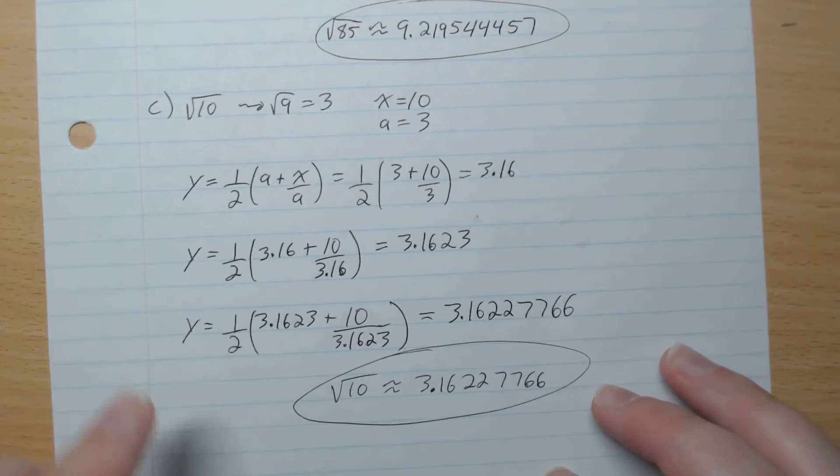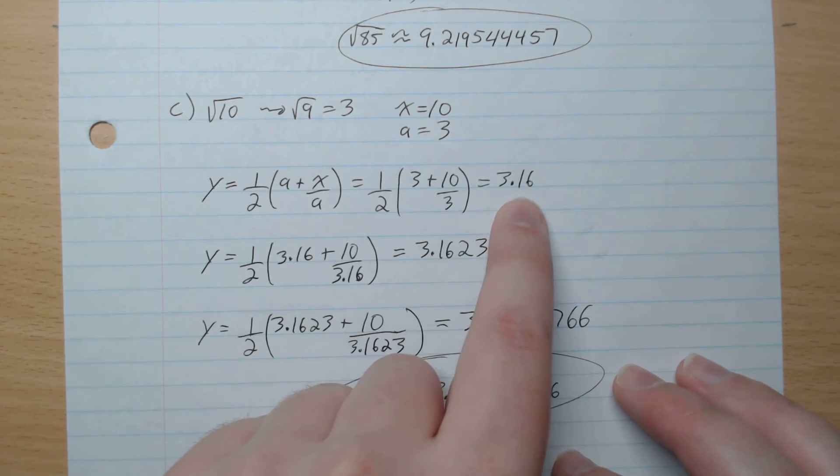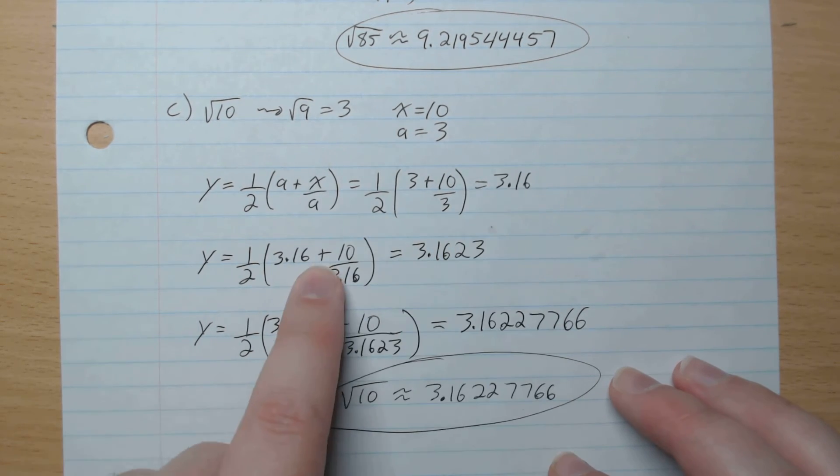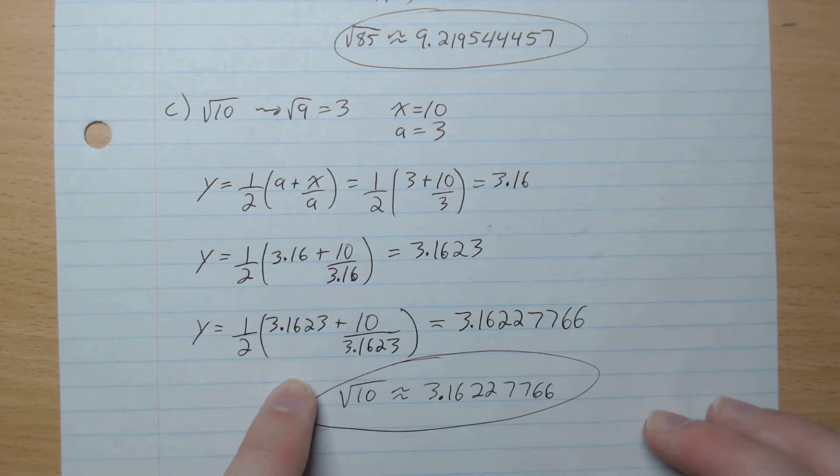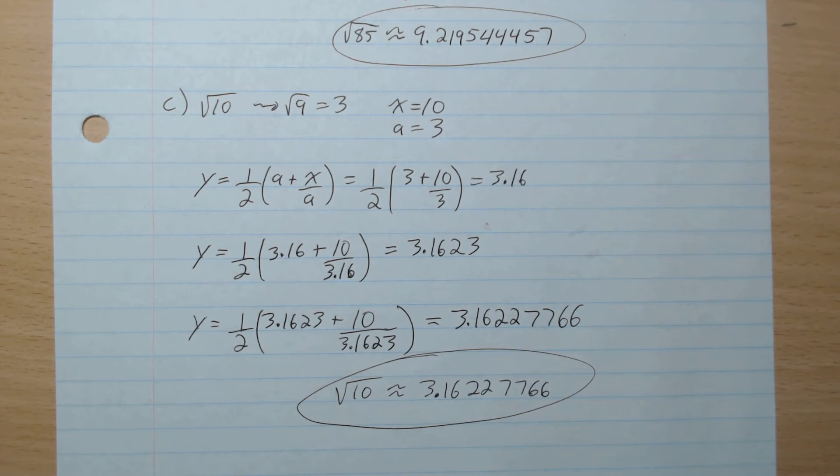C. Root 10. Closest is root 9. So a is 3, x is 10. Plug that in, we get 3.16. Plug that in, and we get 3.1623. Plug that in, and we get 3.16227766 as our approximation.